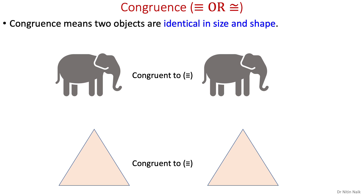Similarly, in figure 2, the left hand side triangle is congruent to the right hand side triangle, meaning that their angles, length of sides, and overall dimensions are identical. Just remember, all congruent figures are similar, but not all similar figures are congruent.